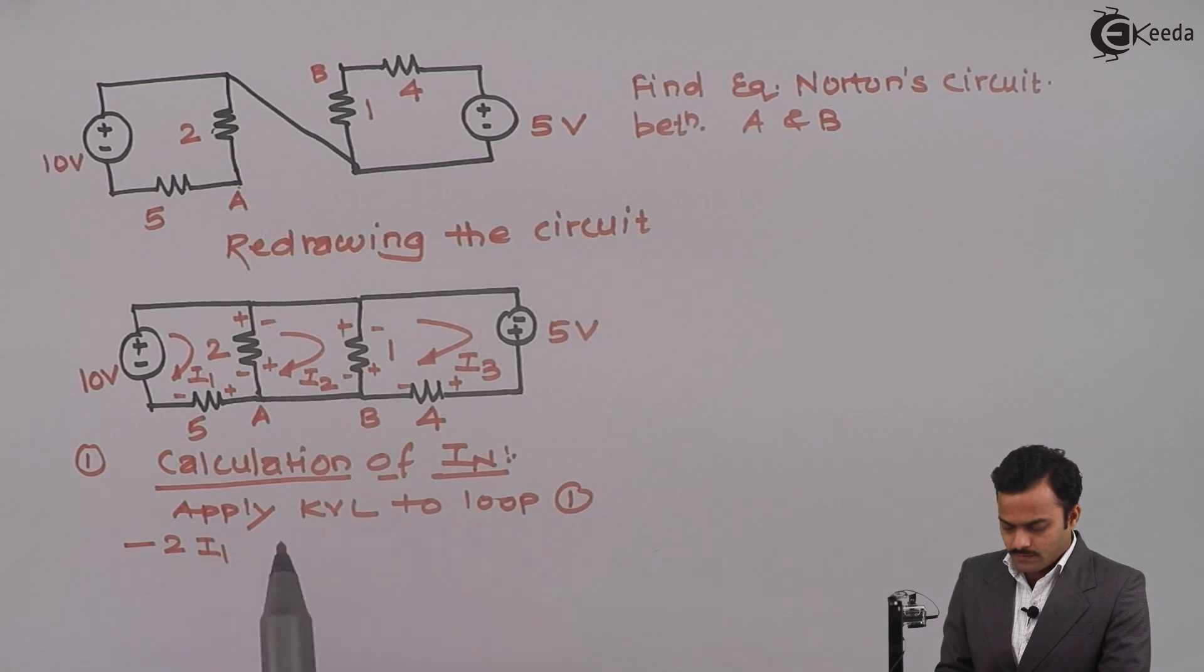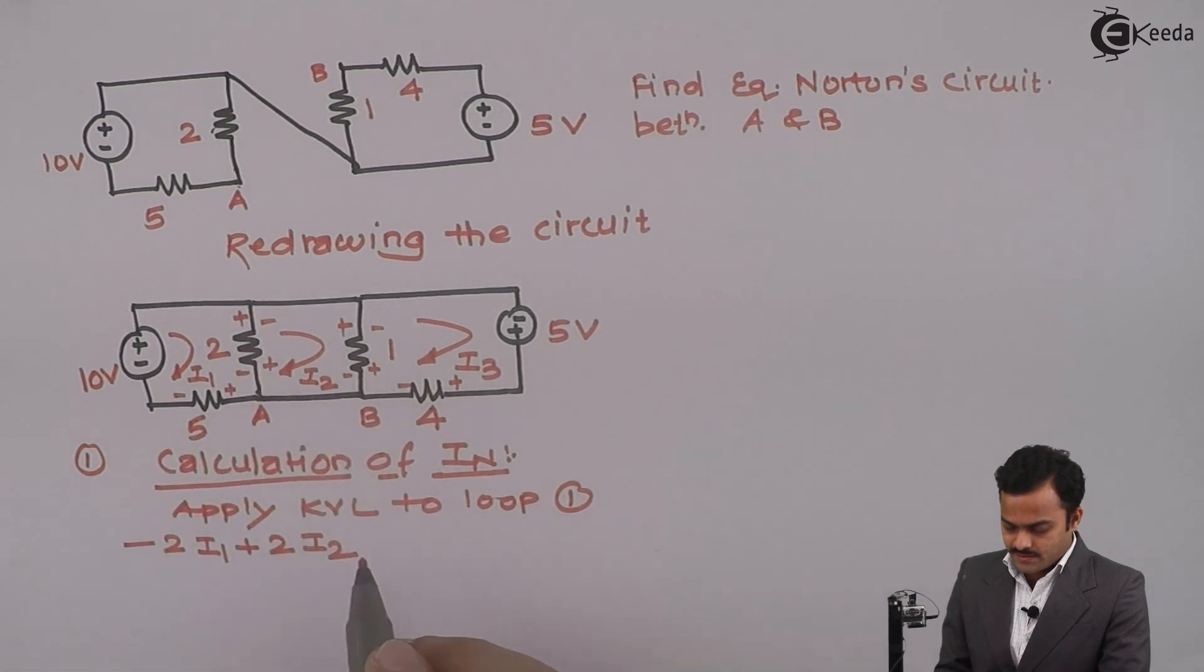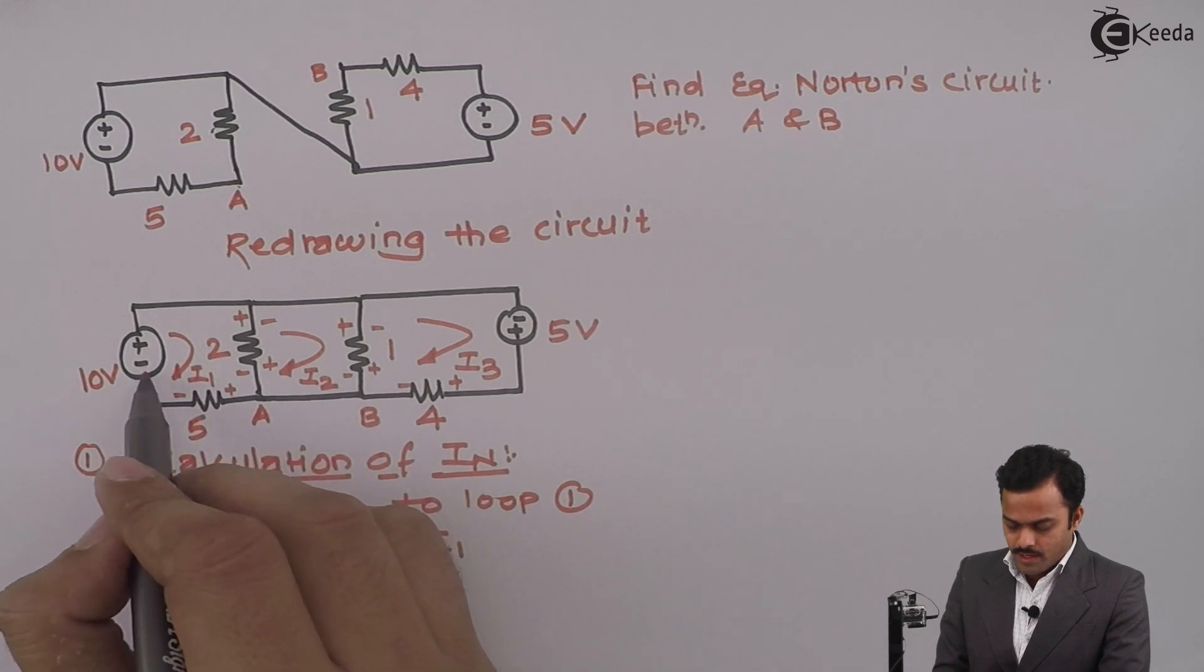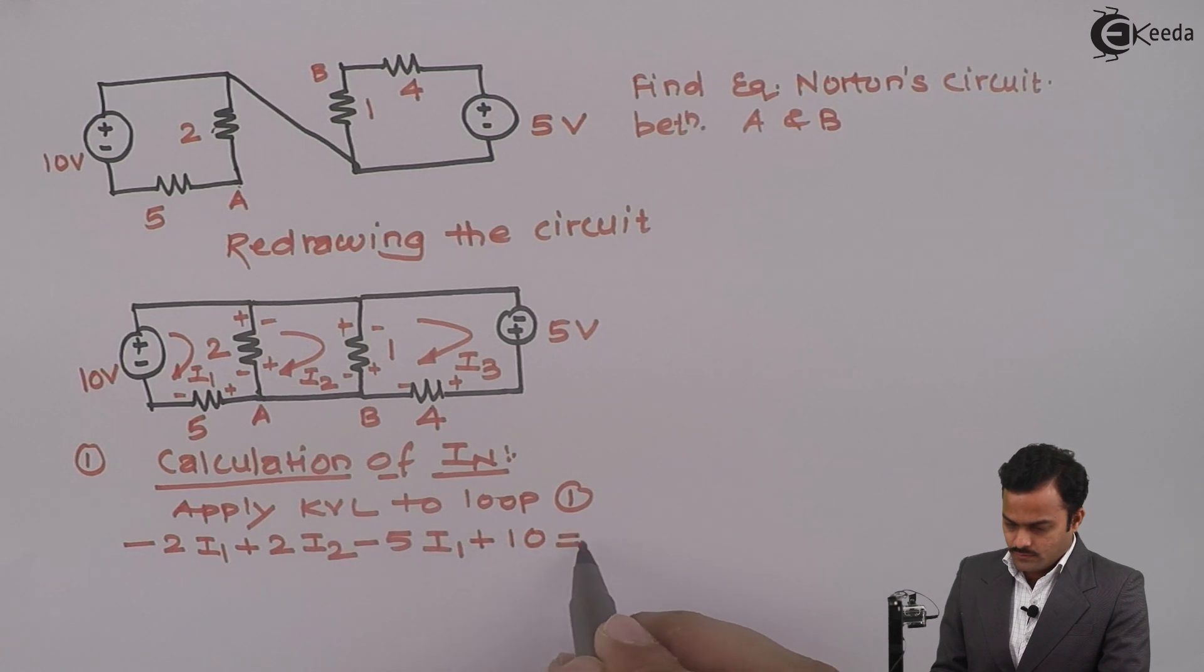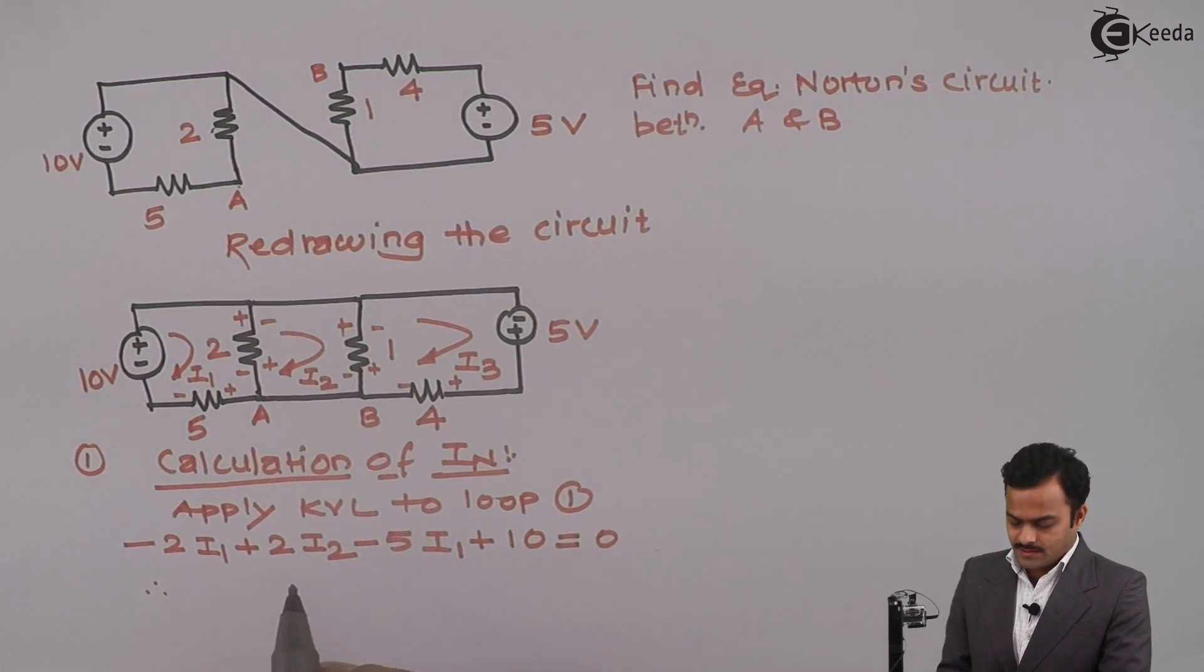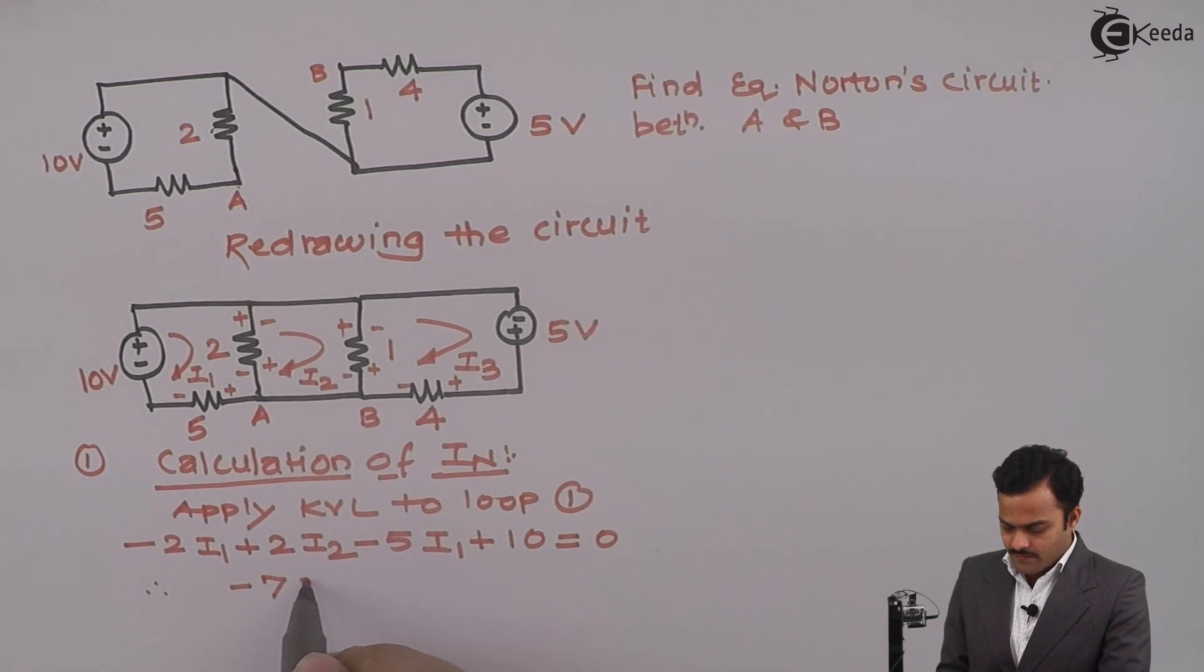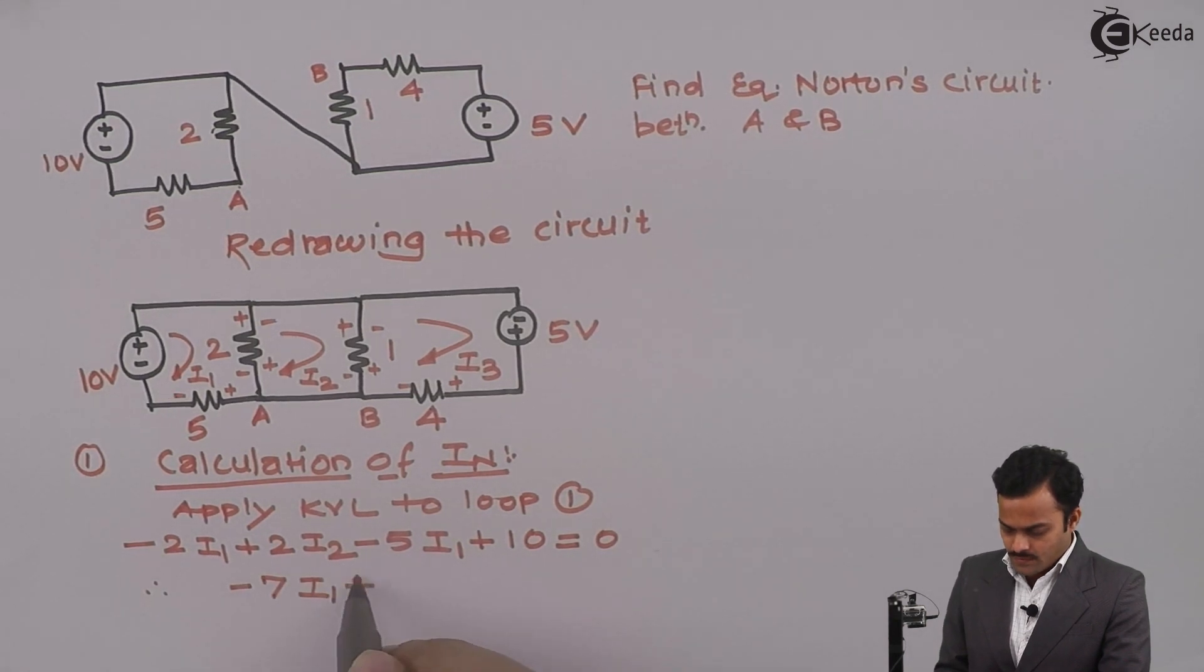If I simplify this I will get minus 7I1 plus 2I2 equals minus 10. This is equation number one.